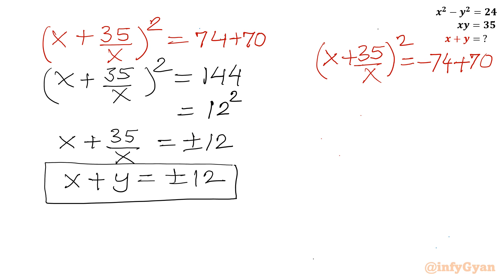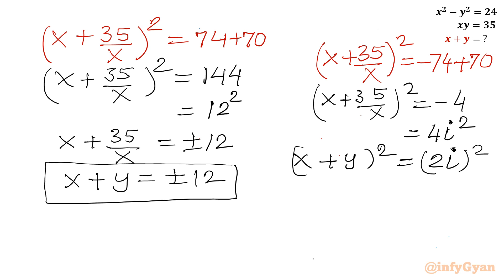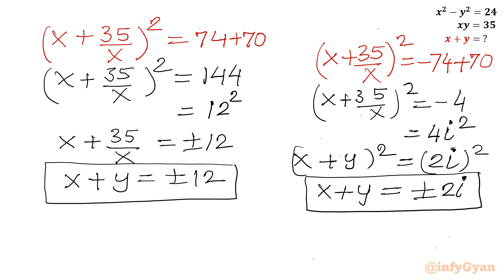For the second equation, x plus 35 over x, whole squared, equals minus 4. Since minus 1 equals i squared, this is 4 times i squared, or 2i whole squared. Taking the square root: x plus y equals plus or minus 2i. This value is complex. That completes method number 1.